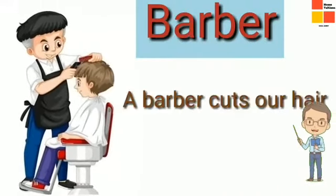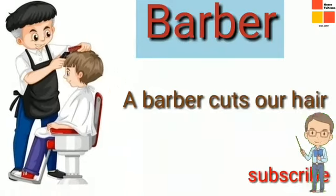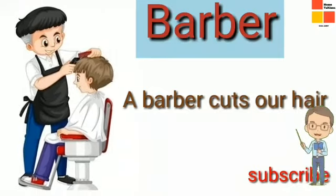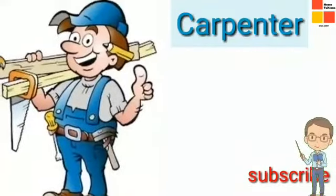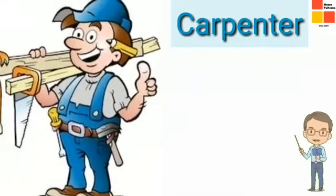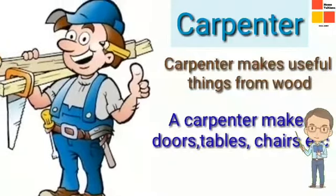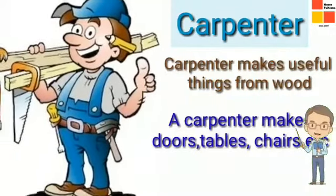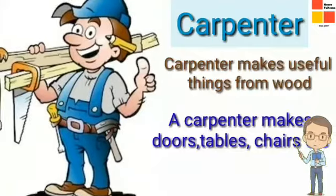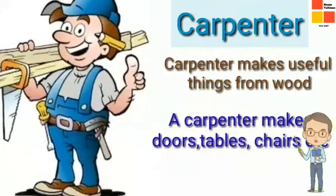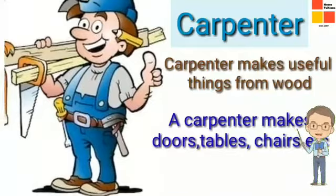This next picture is very familiar to you. Who is he and what does he do? A barber cuts our hair so that everyone can style it. Next, the carpenter. A carpenter makes wooden furniture — good things from wood. A carpenter makes doors, tables, chairs, windows, and so many things.